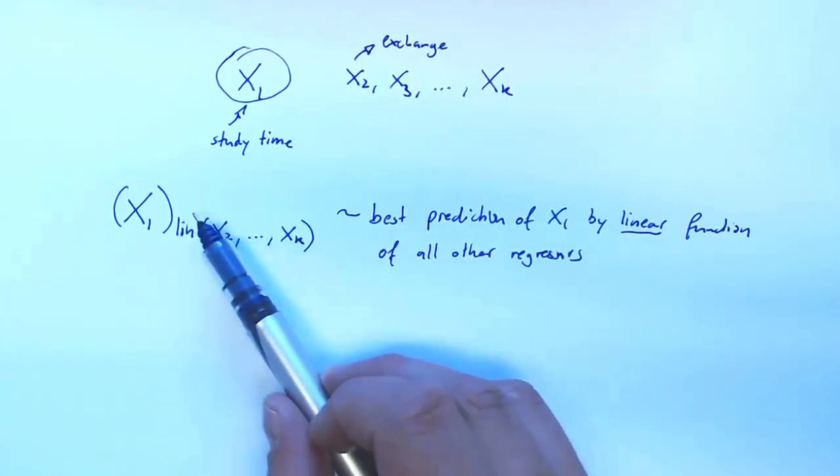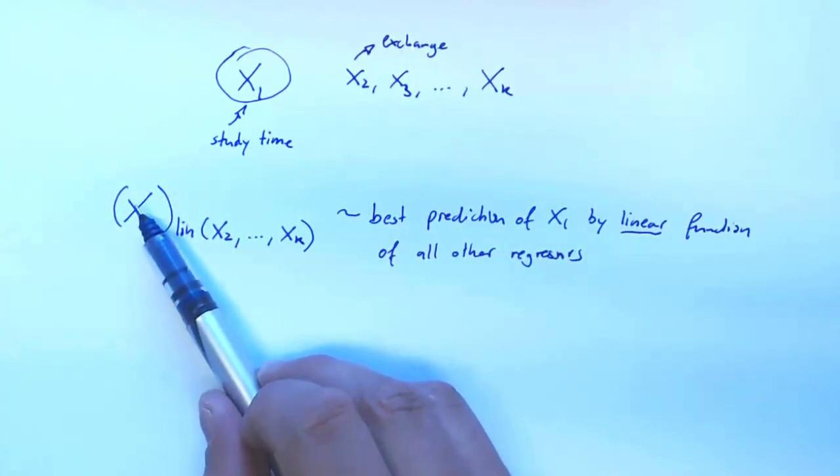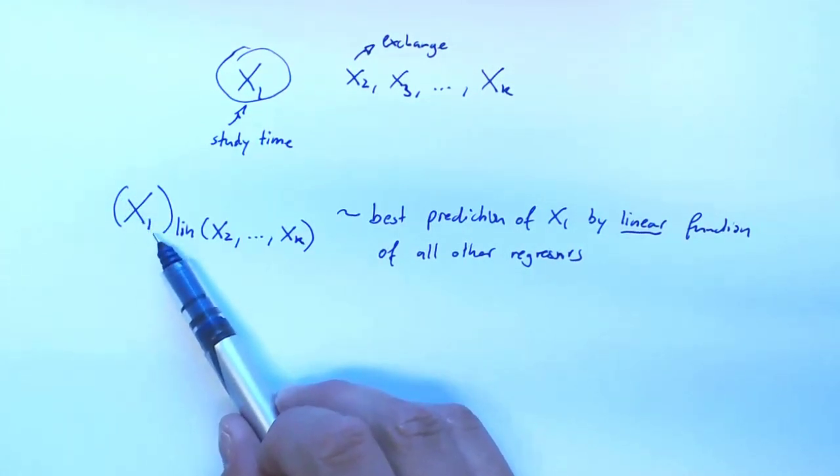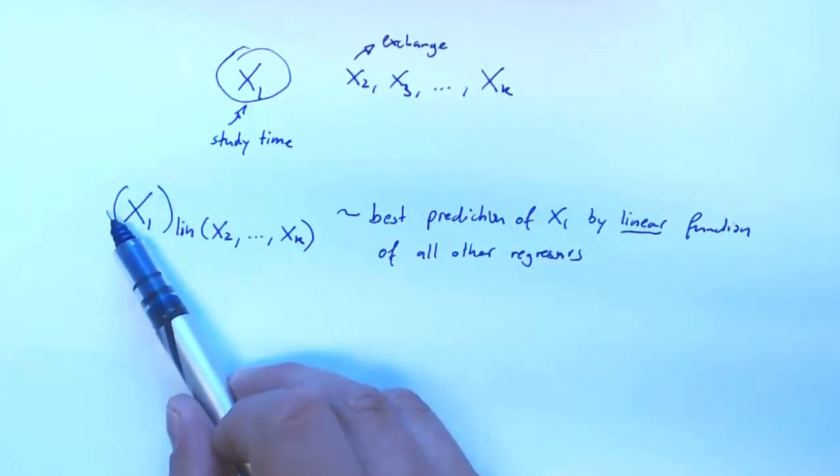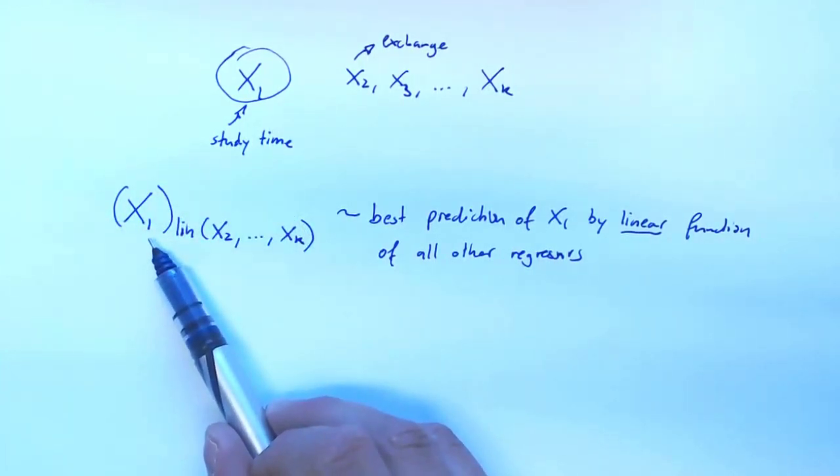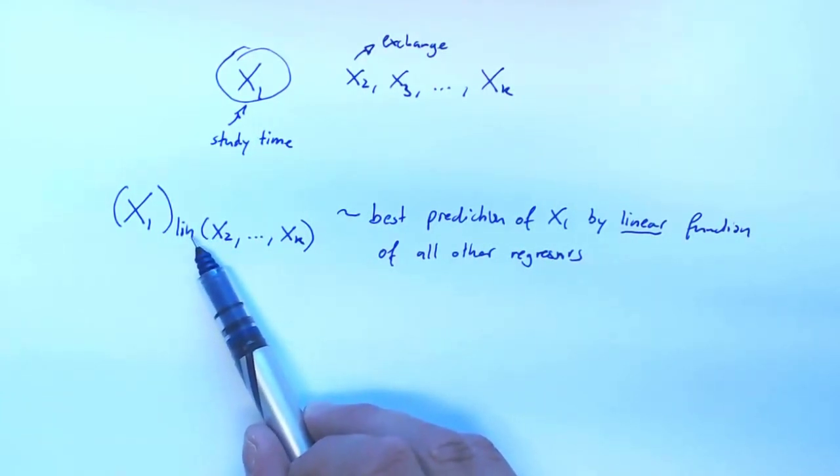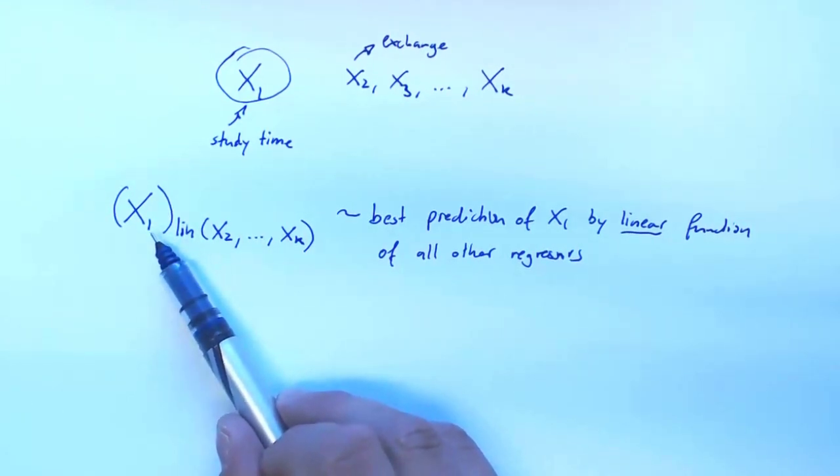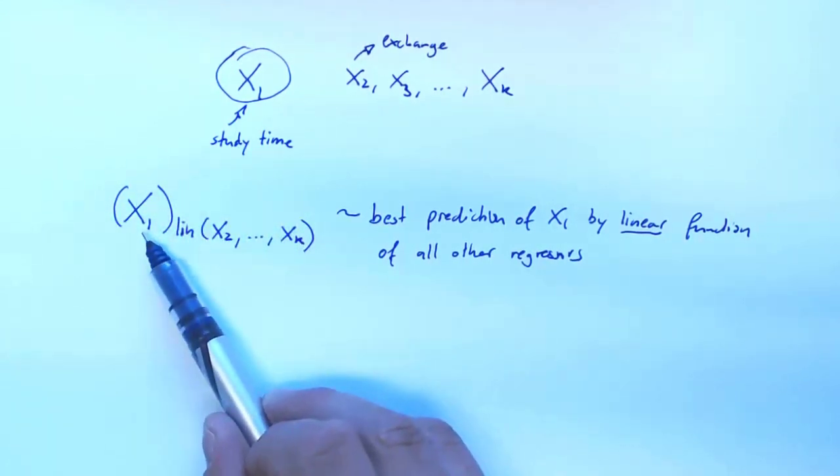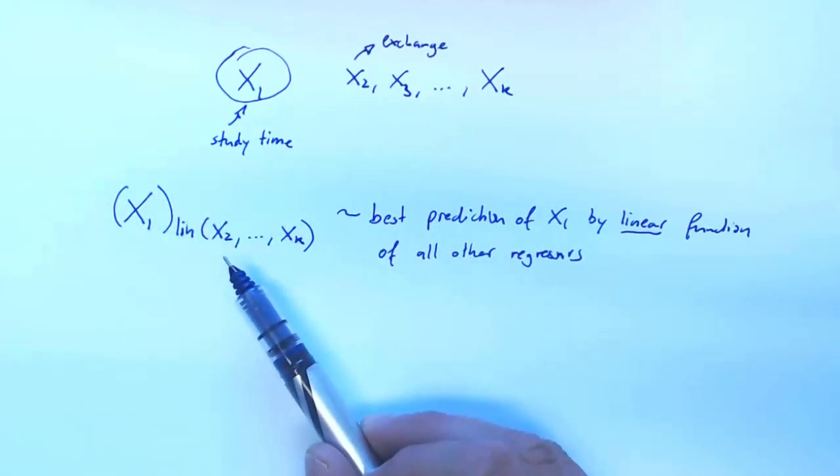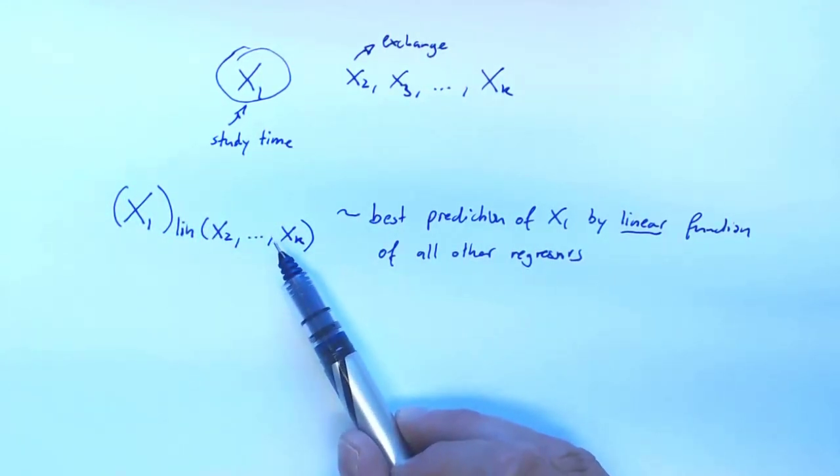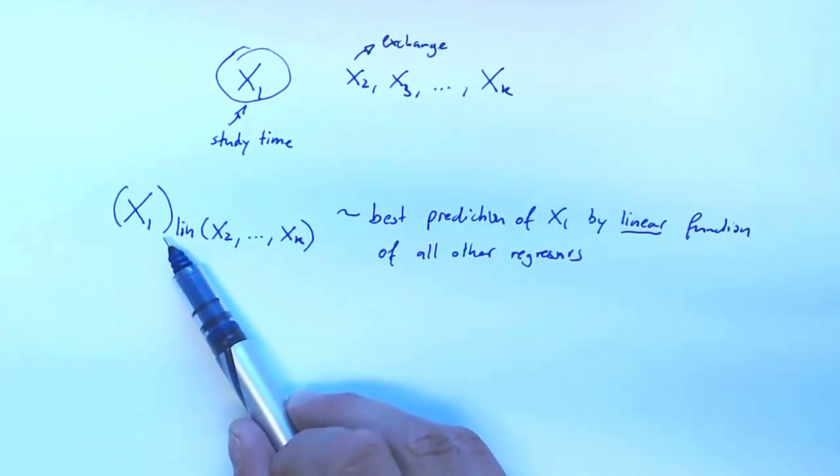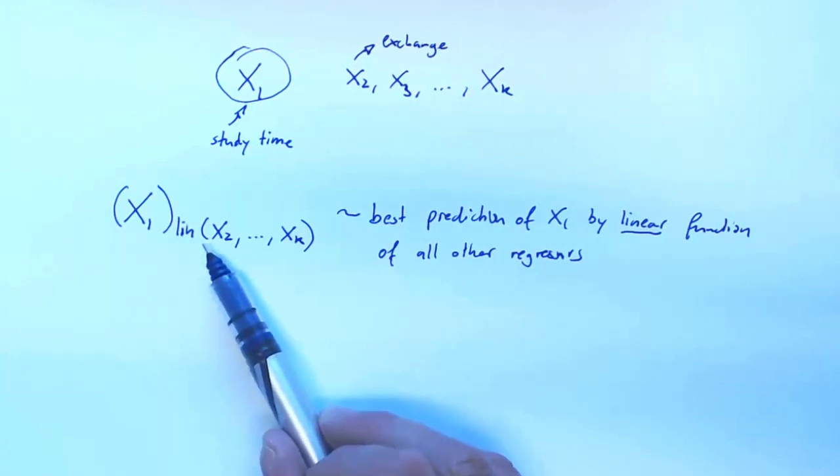And so in a way this describes, the best linear prediction of X1 as a function of X2 up to XK basically is a version of X1 that only takes what we can learn about X1 from looking at the other regressors, right. So if X1 adds additional information, then X1 will be different from this. If X1 doesn't add any new information, then this will be equal to X1, but usually X1 will add more information. So it will, but some of the information that is contained in X1, we already have in X2 and XK.